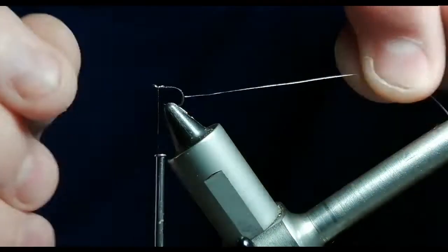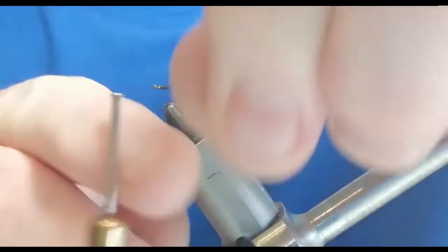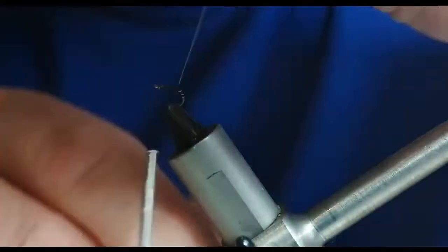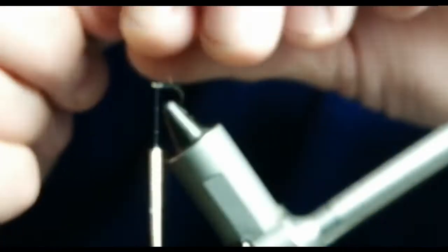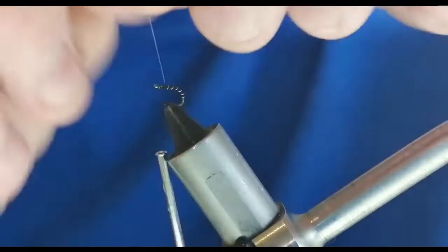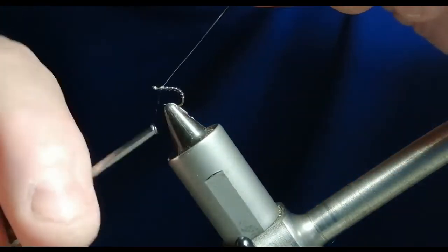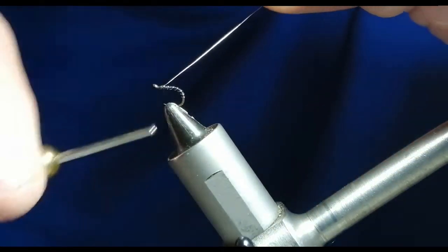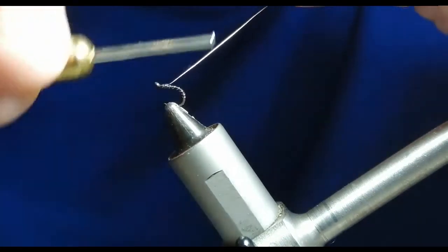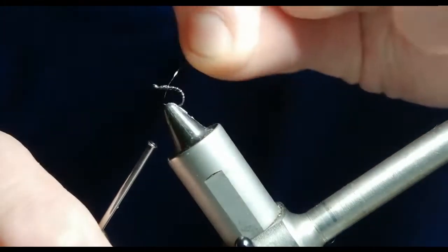And then we'll rib with the wire up along the body to give it segmentation, and then back along, and then we'll spiral that off.